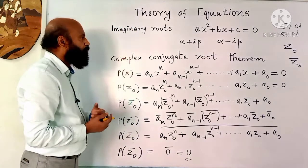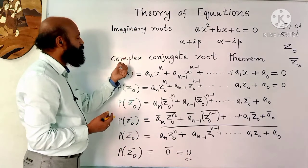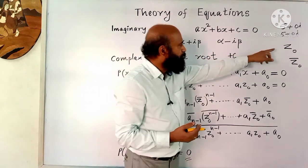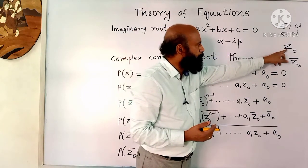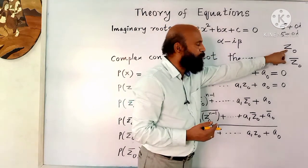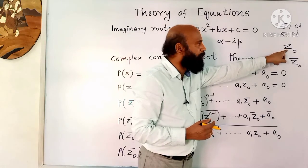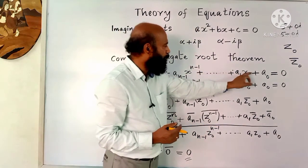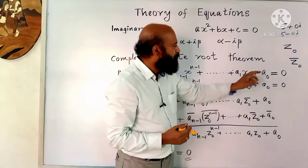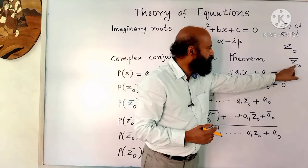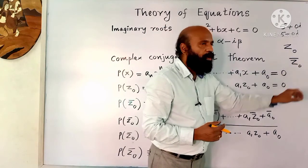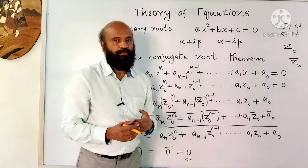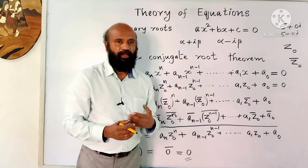So complex roots occur in pairs. That is the complex conjugate root theorem: if z0 is a root of a polynomial equation with real coefficients, then its conjugate z0-bar is also a root of that polynomial equation.